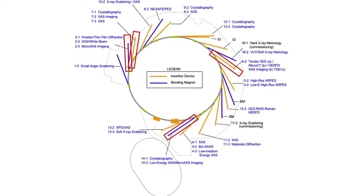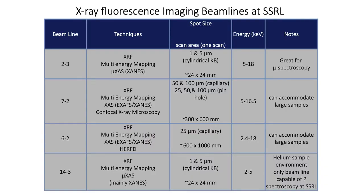SSRL has four micro-XRF beamlines: 2-3, 7-2, 6-2, and 14-3. These beamlines vary in their spot size or spatial resolution, field of view, and energy range. Beamline 2-3 has a spot size of 1 or 5 microns, a field of view of 24 by 24 millimeters, and an energy range of 5 to 18 keV. Beamline 7-2 has a comparable energy range but a coarser spatial resolution of 50 or 100 microns and a much wider field of view of 300 by 600 millimeters.